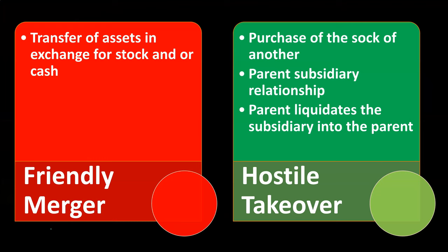We will now compare what could be called a friendly merger compared to what could be called a hostile takeover. We're looking at external expansion — two entities that are somehow merging. The friendly merger involves the transfer of assets in exchange for stock and/or cash. It's more of a friendly situation because you have the management of both entities negotiating over the price and consideration for the assets.